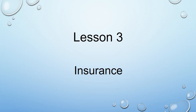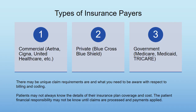Lesson three: insurance. There are three primary types of insurance payers. There are commercial payers — those are the Aetna, the UnitedHealthcare, the Cigna, those types of payers. There are private insurance payers like Blue Cross Blue Shield. And there are government insurance payers such as Medicare, Medicaid, and TRICARE. Each of these payers may have unique requirements for processing claims that you need to be aware of with respect to billing and coding.